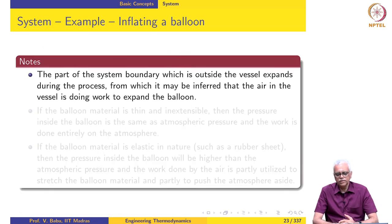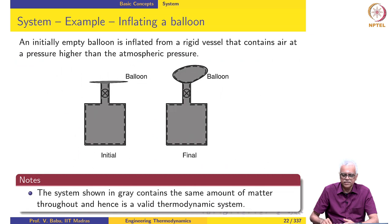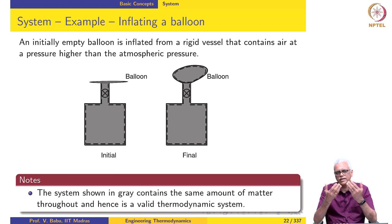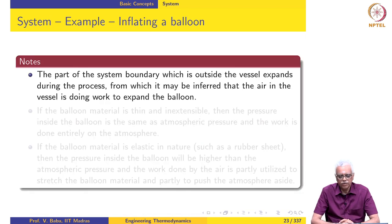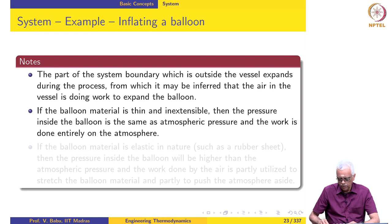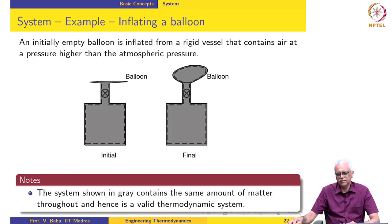The part of the system boundary outside the vessel expands during the process — it occupied almost zero volume at the beginning and then increases in volume — which means the atmosphere is being pushed aside. This means the system is doing work against the surroundings, which in this case is the atmosphere. So the air in the vessel is actually doing work to expand the balloon.